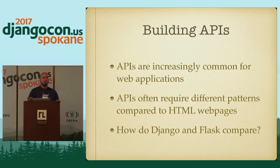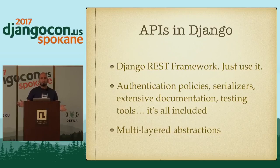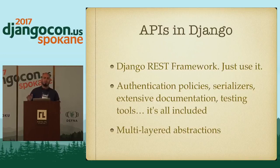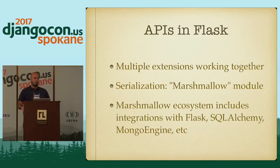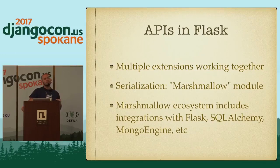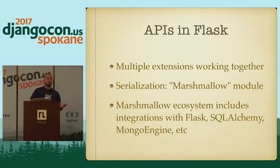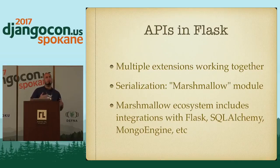Another thing that a lot of websites need is APIs. They're increasingly common for web applications and have different usage patterns compared to HTML web pages. When you're dealing with Django, you want to use Django REST framework — it's great, with multi-layered abstraction so you can choose which layer you want, tons of documentation, and it works great. With Flask, you want to use multiple different extensions working together. With Django REST framework, the core of how your API is structured is the serializer. In Flask, you would probably want to use the Marshmallow module, which is a serializer framework with integrations for Flask, SQLAlchemy, MongoEngine, and a whole bunch of other things.